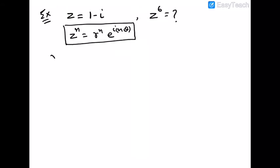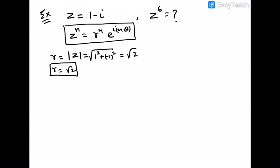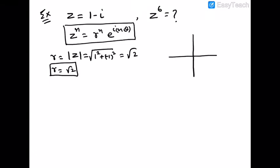Now first find out the value for r, that is mod of z, which will equal root of 1 squared plus minus 1 squared, that will give us root 2.